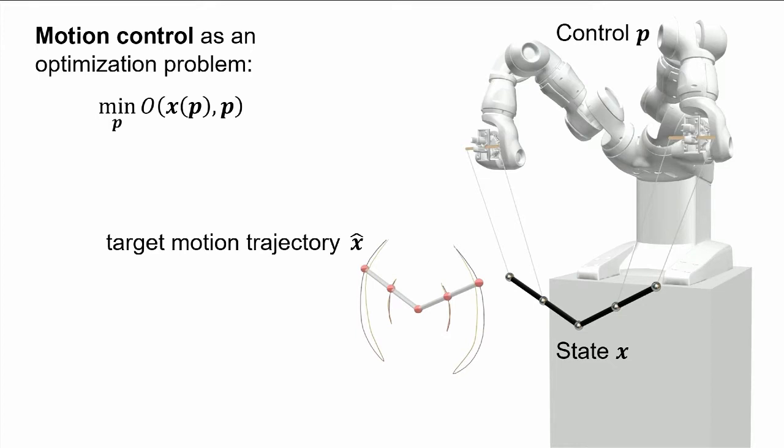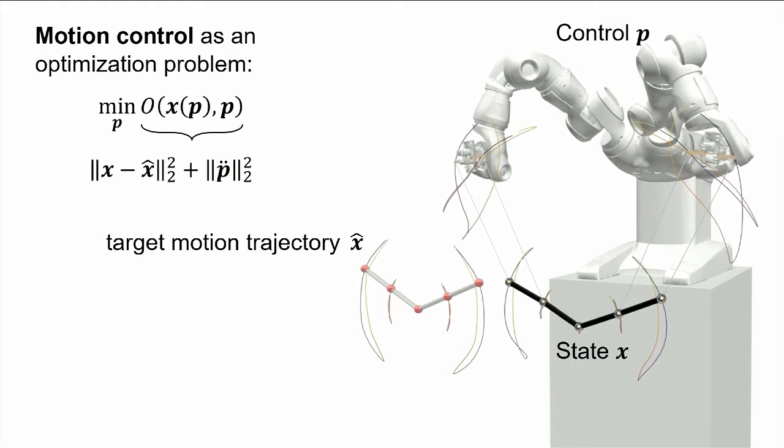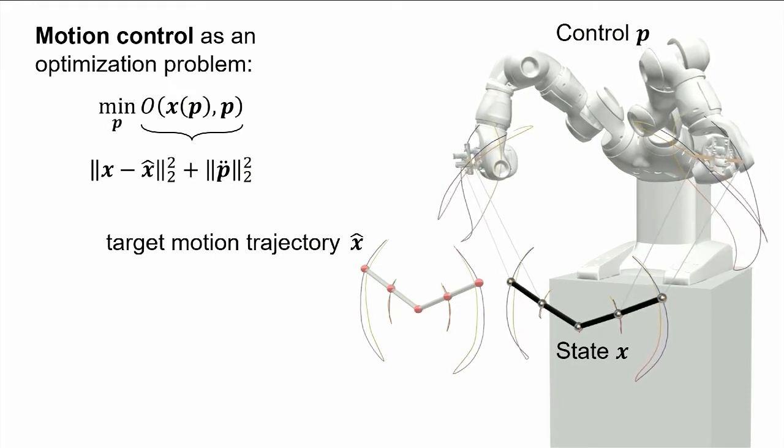We can formulate this motion control task as an optimization problem, which means that we can minimize for our control input P, and our objective O is a function of X and P. Now, O, in our case, is the sum of two essential objectives. First of all, we have this quadratic one, which tries to match the physical motion of the marionette as closely as possible to this predefined target trajectory. And we also have this term that penalizes high accelerations of the control, which promotes smooth robot motions. Now, we can solve this optimization problem, and we end up with a choreographed motion for our robot puppeteer, which manipulates our marionette in a physically valid way.